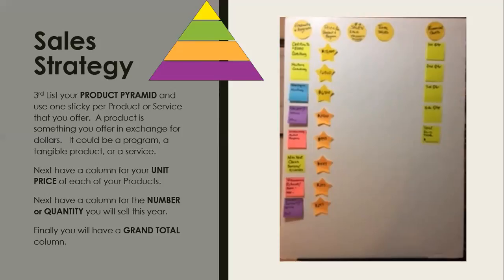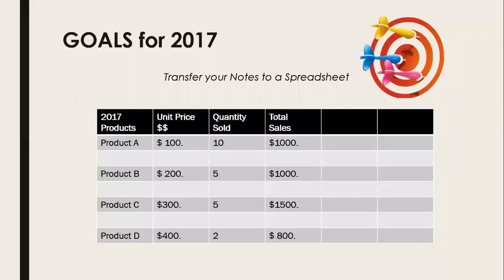I've been using this method for many years since I was a VP of sales. If you do this product pyramid and know your pricing structure — pricing your products from high to low and giving your customers more than one area to focus on so they have options — that is your sales strategy. Transfer all of that sticky note information to a spreadsheet and let it do your math.